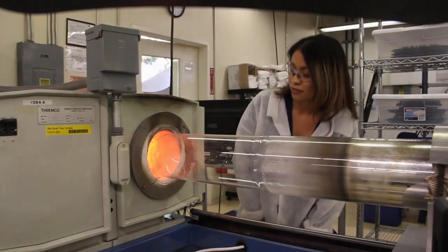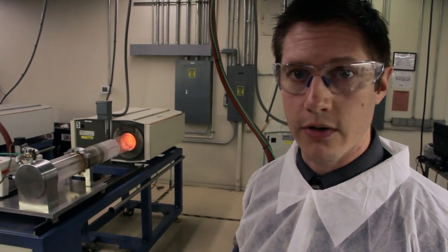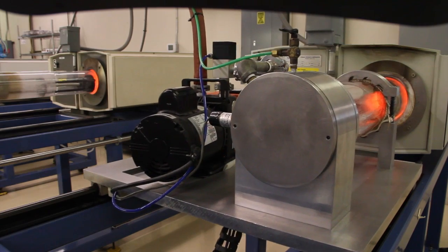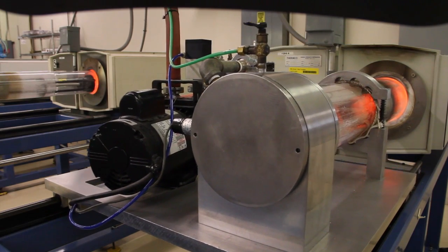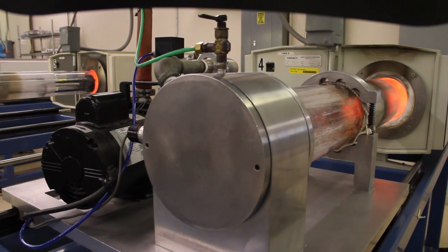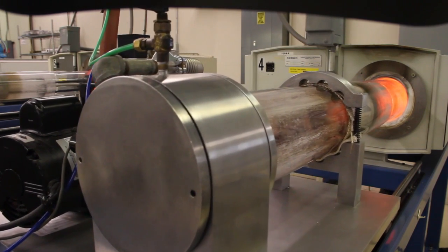Next in our diode fabrication process, we need to stack each of these wafers. Now that they've got silver on them, it's pretty easy to melt them together. They go right into these two furnaces here for a couple hours at high temperature. They push together to make a good metallurgical bond.